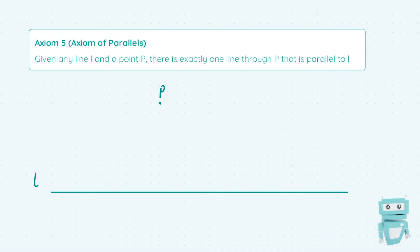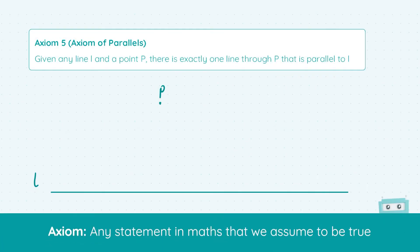Just to remind you what an axiom is - an axiom is any statement in maths that we assume to be true. We just state it and then from that point onwards we can assume that it's true.